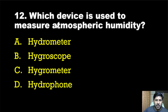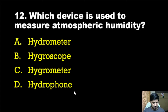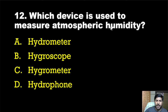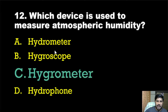Twelfth question: Which device is used to measure atmospheric humidity? The correct answer is hydrometer. Hydrometer is used to measure atmospheric humidity.